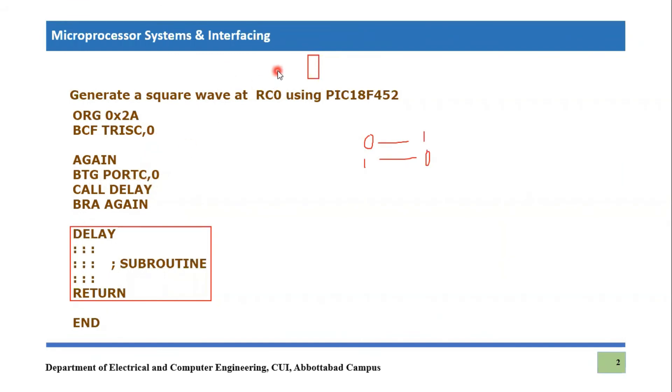So if it was zero, let's say it was zero in the start, it would become equal to one. So it's a zero level and it's a one level. And then we are calling a delay. Delay is a certain subroutine that we can see. I'm not writing a delay specifically, but I'm just mentioning there would be a delay subroutine. And then we come back to the code and then we branch again and go back to again and then we toggle it again.